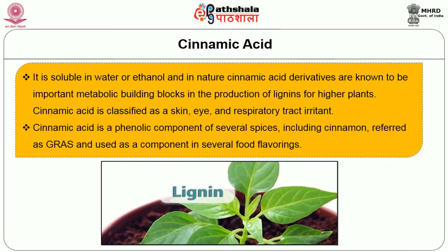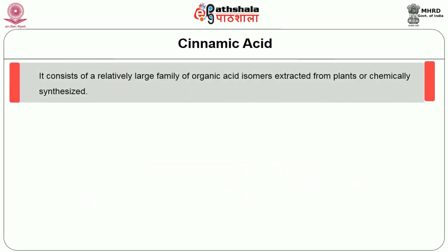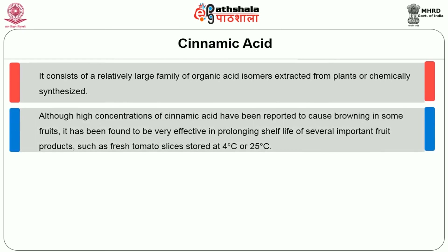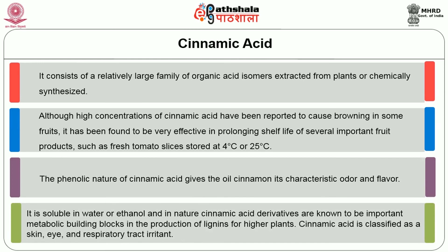Let us see about cinnamic acid. It is a phenolic component of several spices including cinnamon, referred to as GRAS and used as a component in several food flavorings. The chemical formula is C9H8O2. It consists of a relatively large family of organic acid isomers extracted from plants or chemically synthesized. Although high concentrations of cinnamic acid have been reported to cause browning in some fruits, it has been found to be very effective in prolonging the shelf life of several important fruit products such as fresh tomato slices stored at 4 or 25 degrees centigrade. The phenolic nature of cinnamic acid gives cinnamon oil its characteristic odor and flavor. It is soluble in water or ethanol, and in nature, cinnamic acid derivatives are known to be important metabolic building blocks in the production of lignans for higher plants.